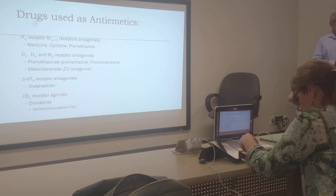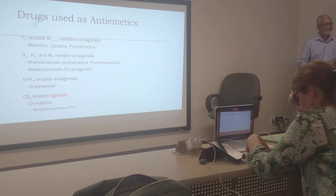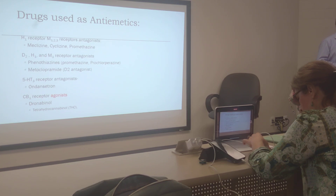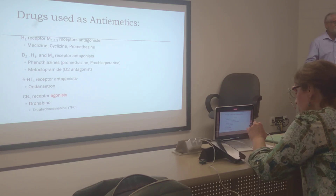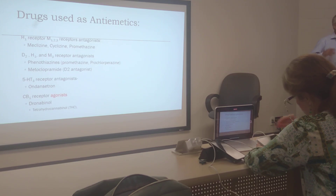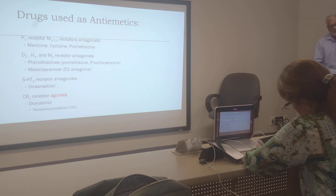Dronabinol — is it schedule one, schedule five, two, three, or five? Which one do you think dronabinol belongs to? And what is the chemical name for dronabinol? It is delta-8-THC. Dronabinol is a controlled substance. You don't get a prescription for that easily. But dronabinol is delta-8-THC. What happens is it goes in like a pro-drug and gets metabolized to delta-9-THC inside the body.